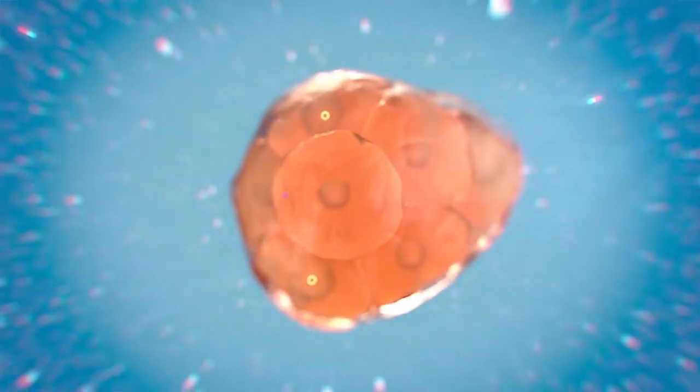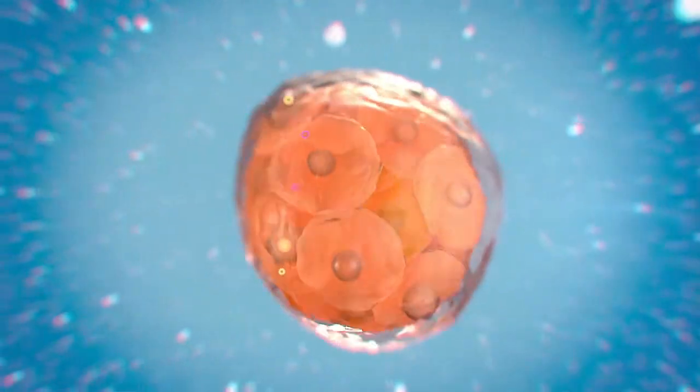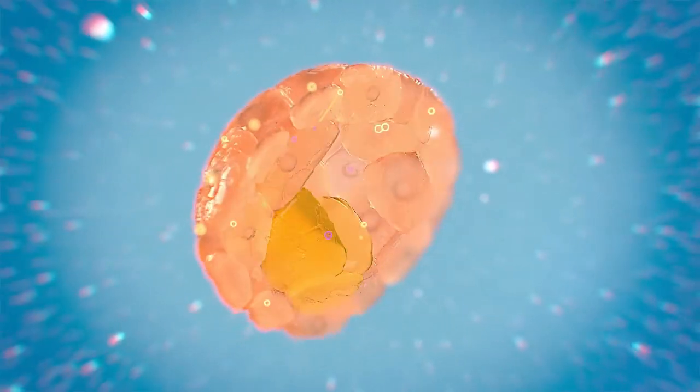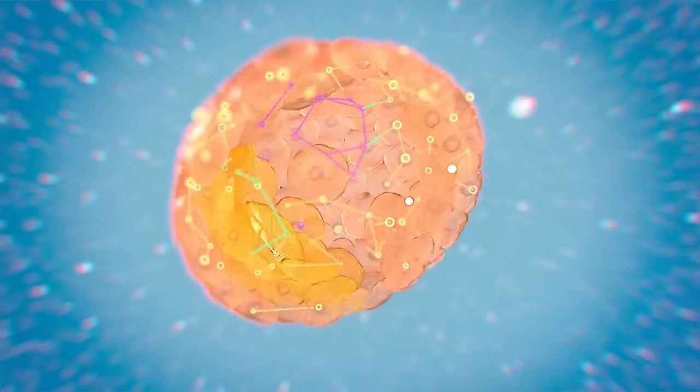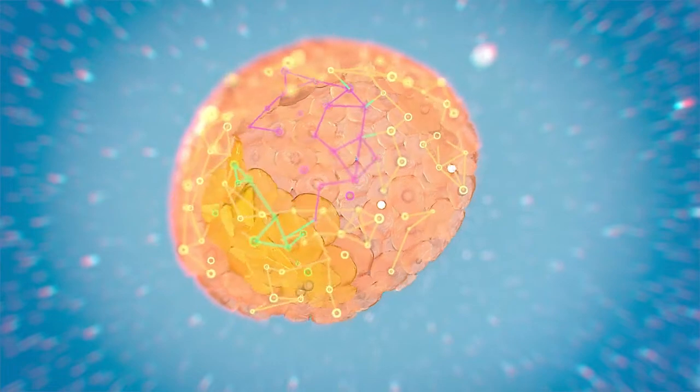This symmetry breaking is essential for the cells to self-organize into the patterns necessary for development. The rules that govern how a group of identical entities initially break symmetry are important at many biological scales.